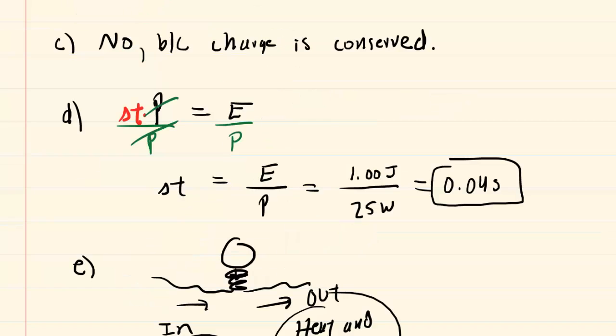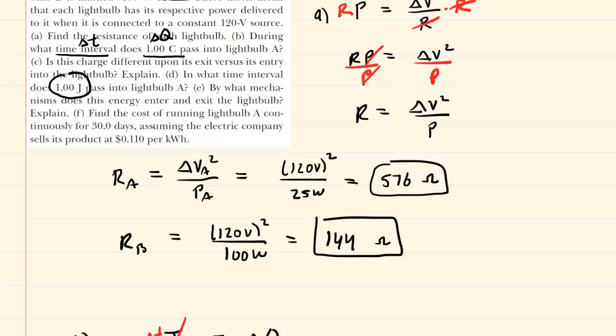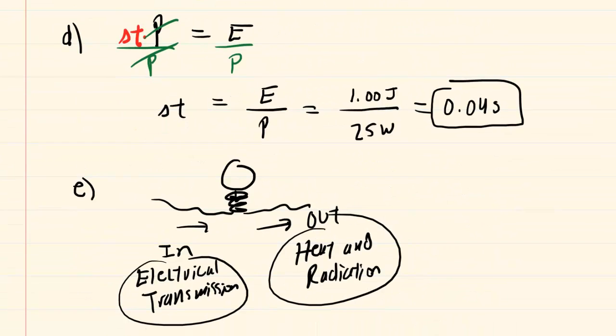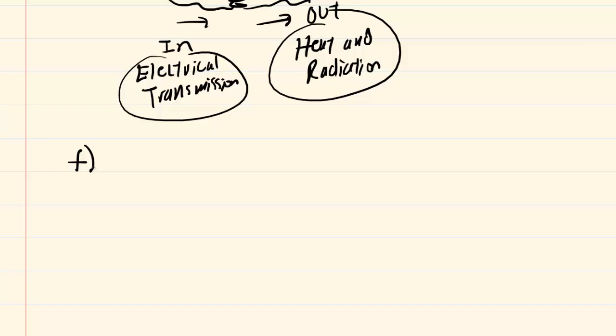We finally move on to part F, which is asking us to find the cost of running this lightbulb. Now, we are given a time interval. And we were given a rate at which the electrical company charges for electricity. So we have to make sense of all of this. We want to remember that the power is energy divided by delta T. This time, however, we're going to solve for the energy. We're going to multiply both sides by delta T. And therefore, we can see that the energy is equal to the power times the time interval.